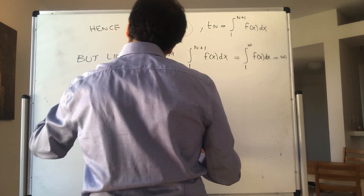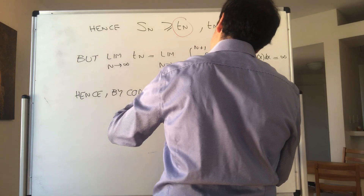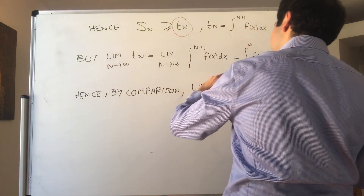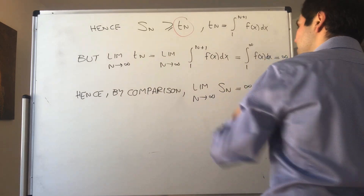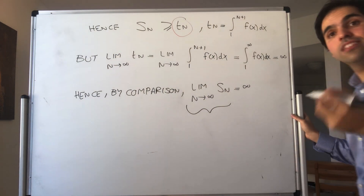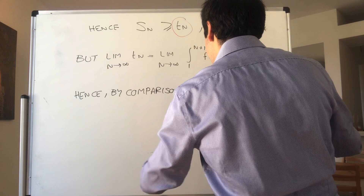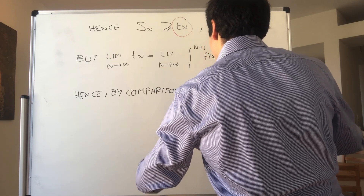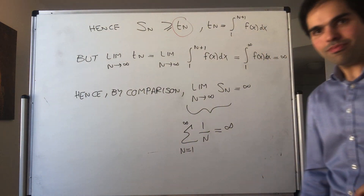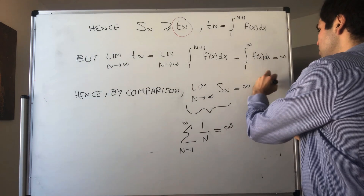Hence, by comparison, the limit as n goes to infinity of S_n is infinity. But what is that limit? A series is literally the limit of those partial sums. So what we get is the sum from n equals 1 to infinity of 1 over n equals infinity. That was the proof of the integral test in this case.